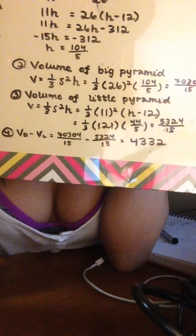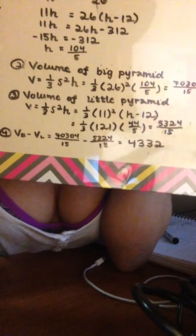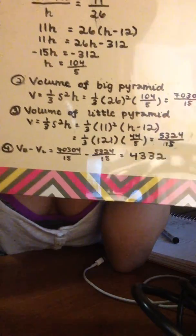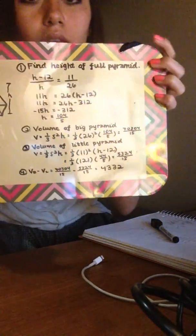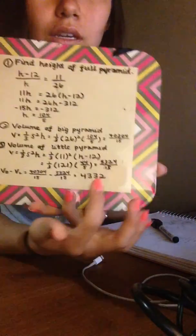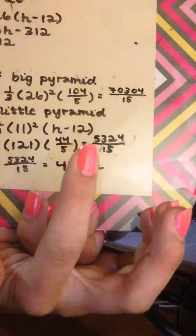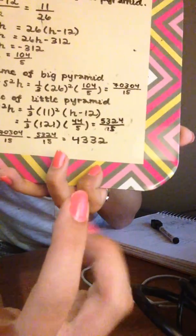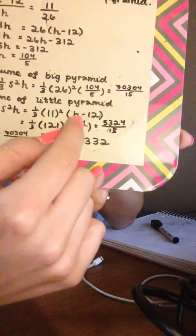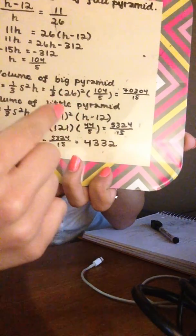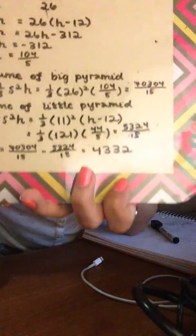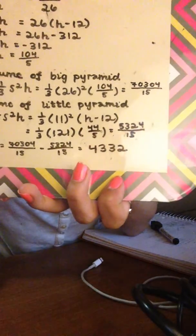Then you want to find the volume of the little pyramid. You're going to use the same general concept, except for the volume of the little pyramid, you're going to use h minus 12 for the height. And you just plug in the value that you got for h, so 104 over 5 minus 12. And that turns out to be 44 over 5. So after you solve the volume of the little pyramid, you end up with 5,324 over 15.